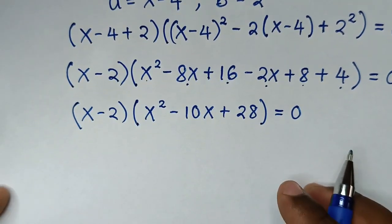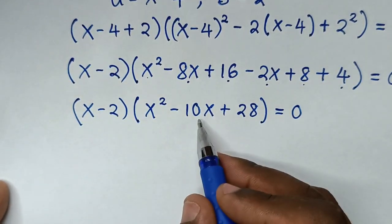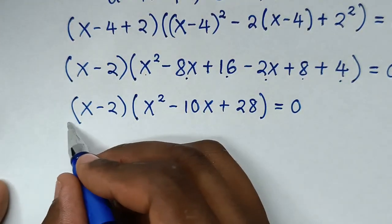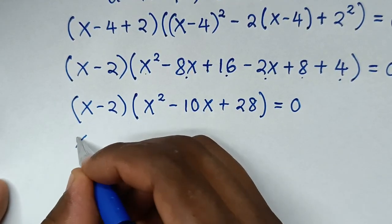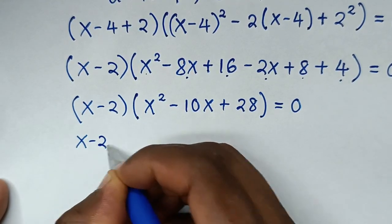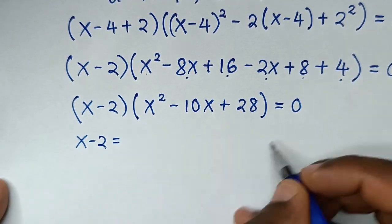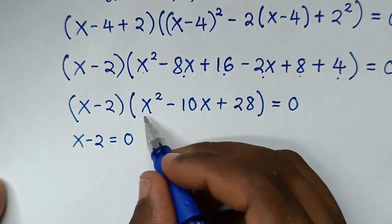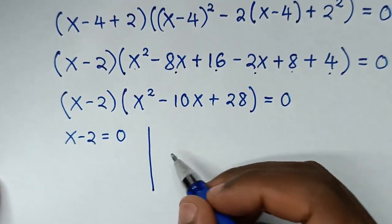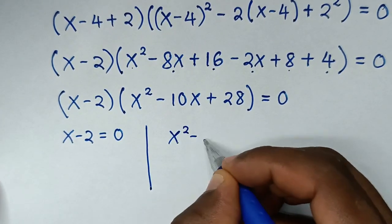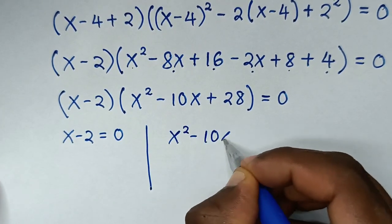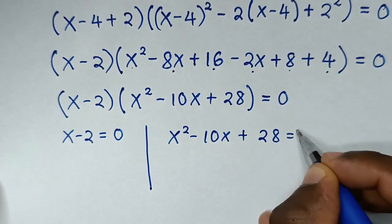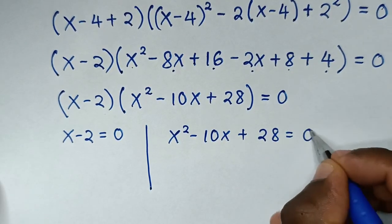We now have two solutions. The first solution comes from x - 2 = 0, and the second solution comes from the quadratic x² - 10x + 28 = 0.